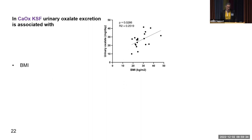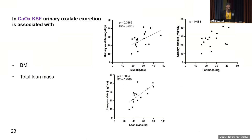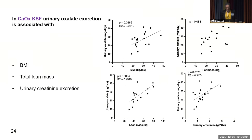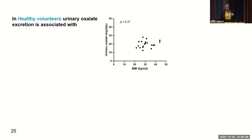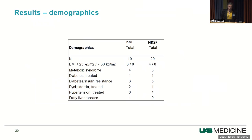In stone formers, 24-hour urine oxalate excretion on the low-oxalate diet was associated with BMI, also with lean mass but not fat mass, and was associated with 24-hour urinary creatinine. In non-stone formers, there was no association with BMI or fat mass, but there was association with lean mass and urinary creatinine. When we compared stone formers versus non-stone formers on the same diet, stone formers had about 6 milligrams greater 24-hour urine oxalate excretion — and that was true even after adjusting for lean mass and urine creatinine.